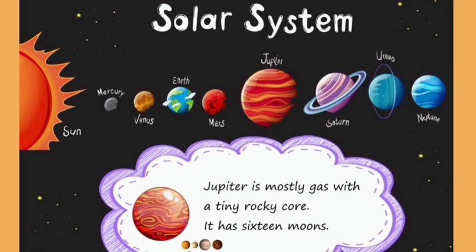Jupiter. Next planet is Jupiter. Jupiter is mostly gas with a tiny rocky core. It has 16 moons.